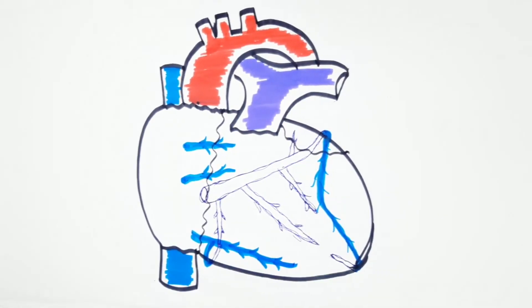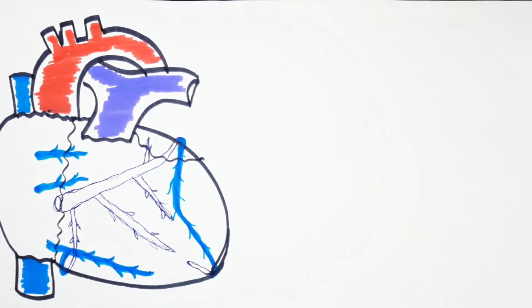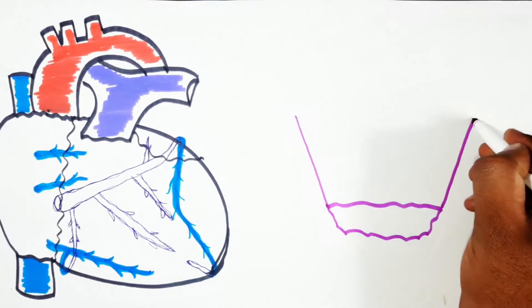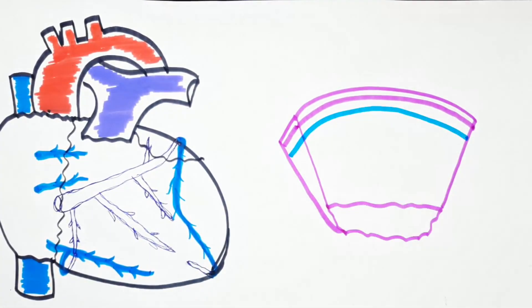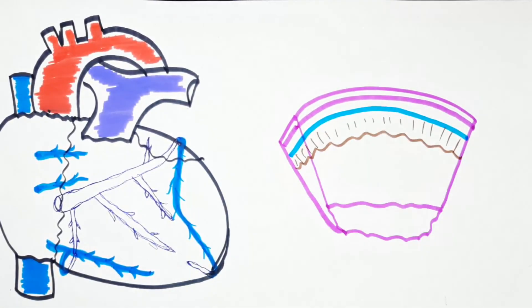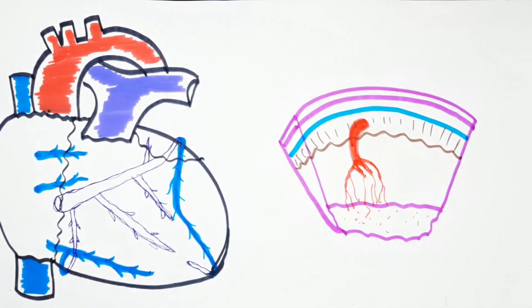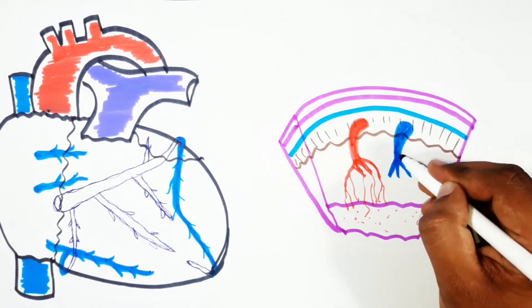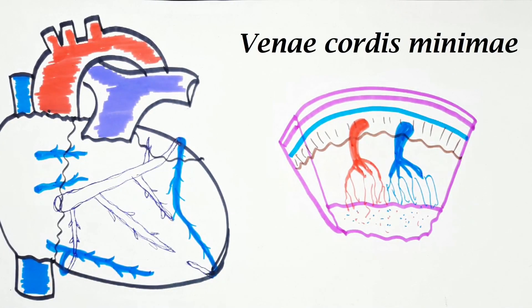There are small veins in the walls of all four chambers that open directly into the respective chambers; they are most frequent in the right atrium. Hope you got a brief idea about the coronary circulation. We'll meet you again with another interesting topic.